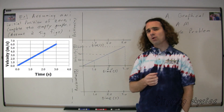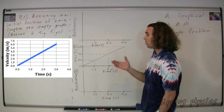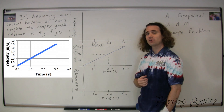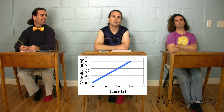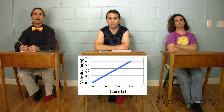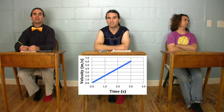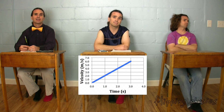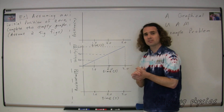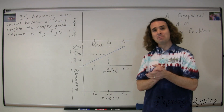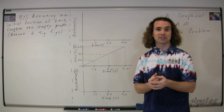Mr. P.: Bobby, before we begin, could you please tell me — how do we know, from looking at the graph, that this is uniformly accelerated motion? The slope of the line is a constant number, and the slope of a velocity versus time graph is acceleration, and therefore the acceleration is constant. Great! Constant slope on a velocity versus time graph means we have a constant acceleration.